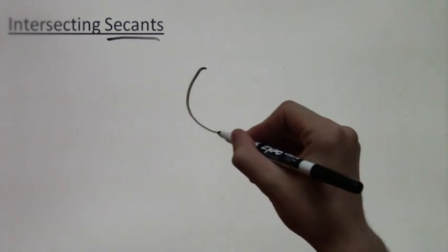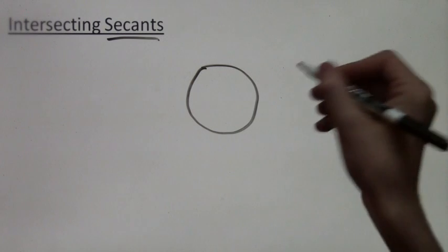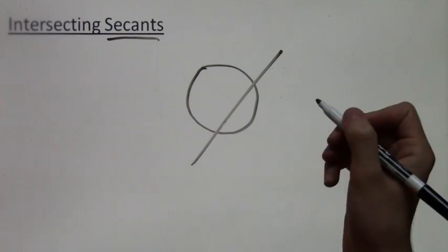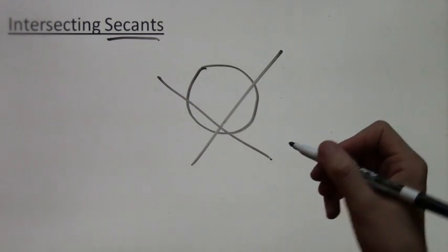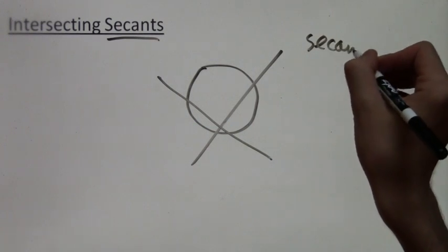In this video lesson, we will learn about intersecting secants. Secants are lines that intersect the circle twice, like the two ones that I just drew.